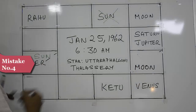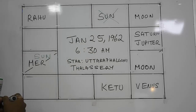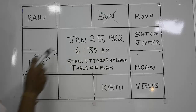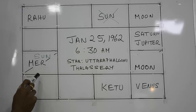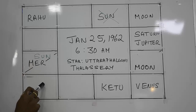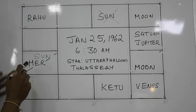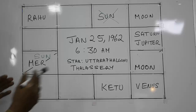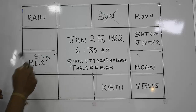Mistake number four is that the sun and Mercury cannot be so far away from each other — lots of people got this answer right. On this day Mercury is over here. The maximum Mercury could be is either with the sun, one sign behind, or one sign ahead, because Mercury can never be farther away than 28 degrees from the sun. It is always close to the sun, so you can only have it here, here, or with the sun.